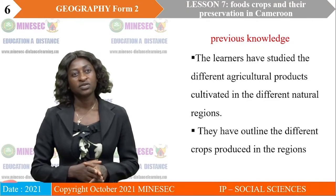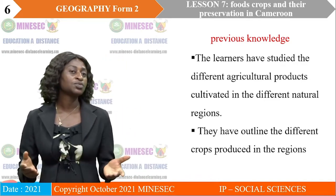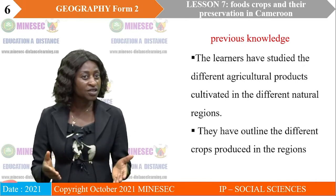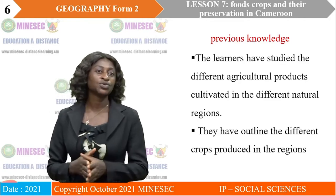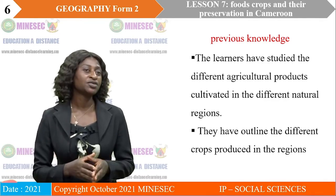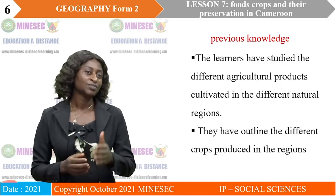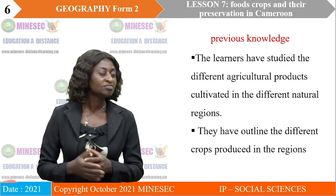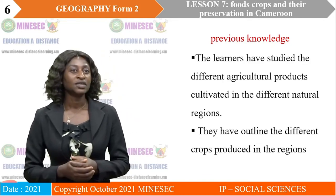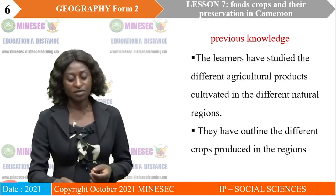Let's look at previous knowledge. The learners have already studied the different agricultural products cultivated in the different natural regions and have outlined the different crops produced in these natural regions. These natural regions are found in Cameroon — they have already studied the equatorial region in the southern part of Cameroon, and in our last class we did the tropical region in the northern part.